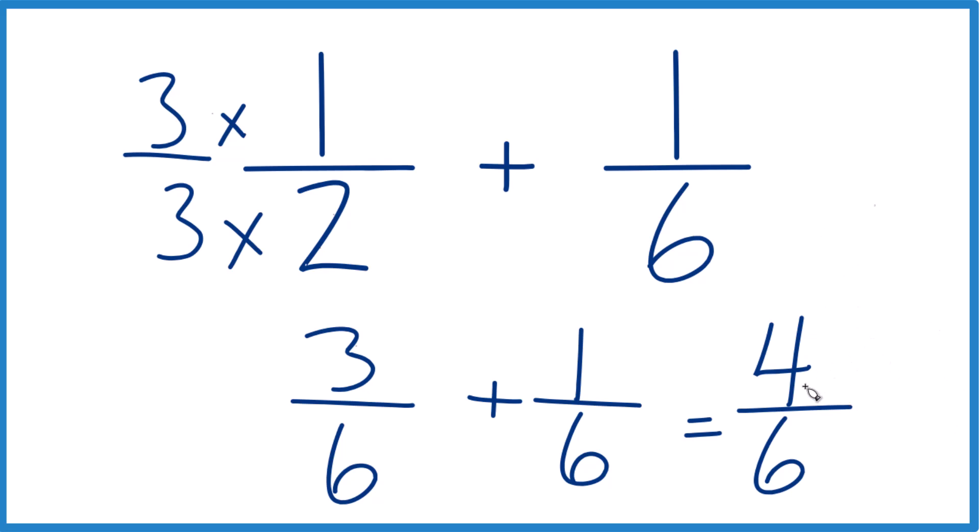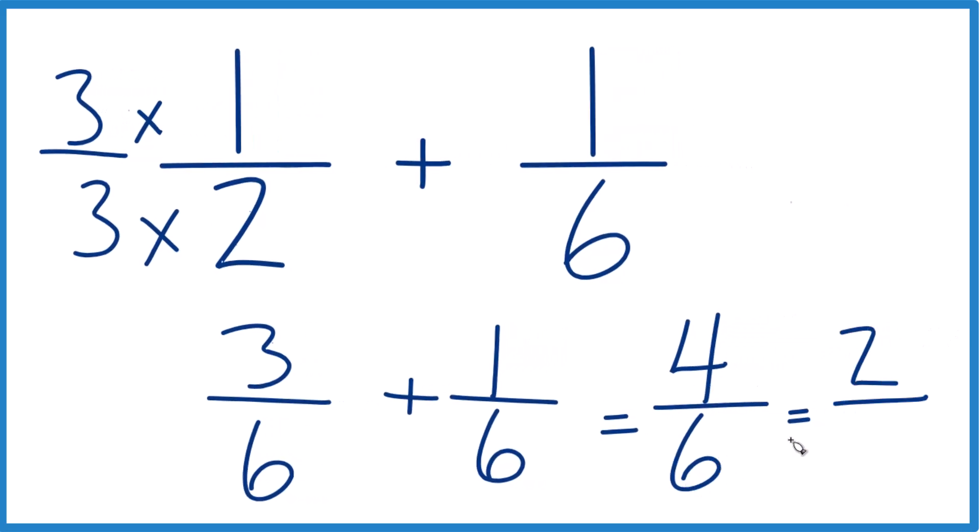And we can actually simplify this further. These are both even numbers. We could call this 2, and then divide 6 by 2, we get 3. So 4 sixths, that's simplified down to 2 thirds.